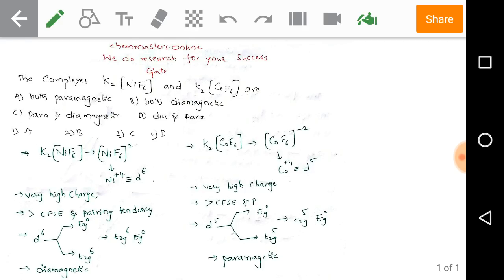Just look at the given problem. The complexes K₂NiF₆ and K₂CoF₆ are nickel hexafluoride and cobalt hexafluoride complexes. Option A: both are paramagnetic.